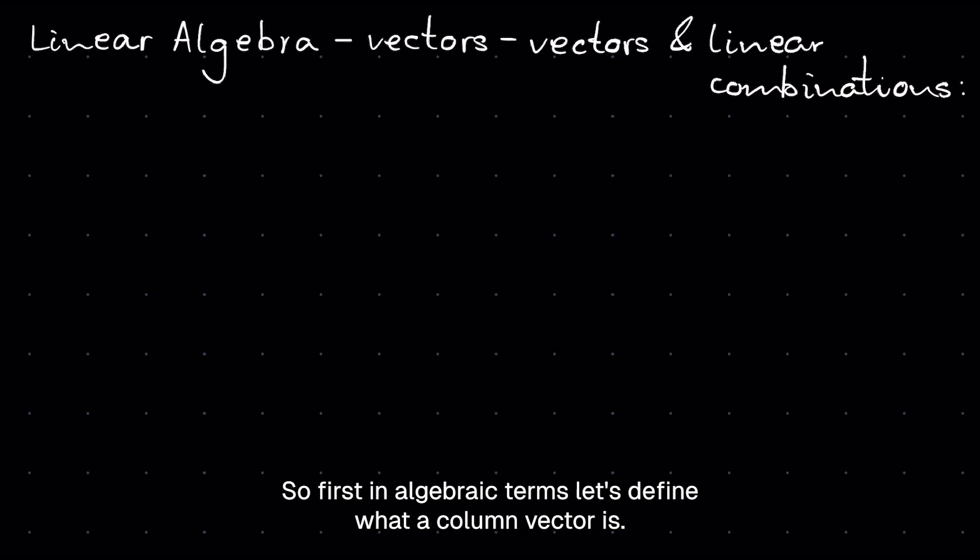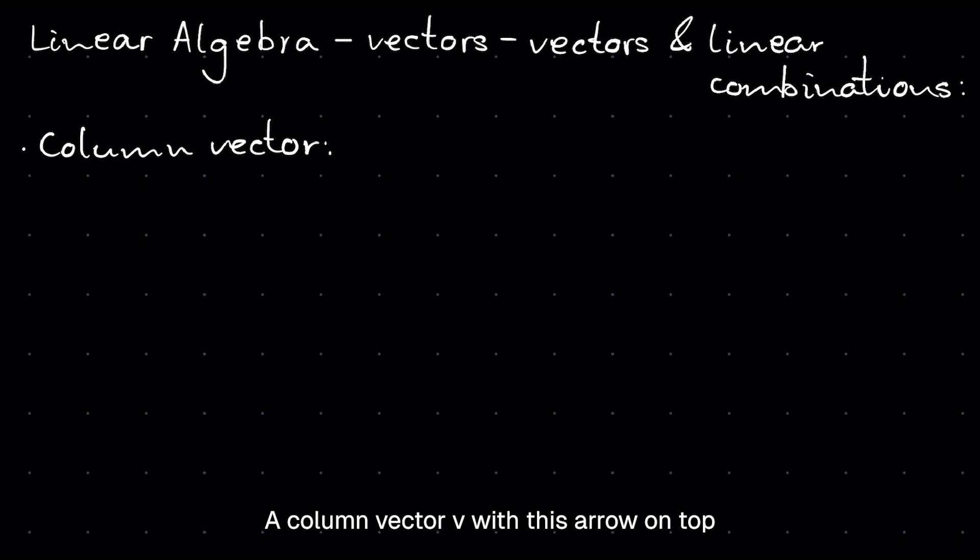So first, in algebraic terms, let's define what a column vector is. A column vector V, with this arrow on top, is equal to V1, V2 in two dimensions.